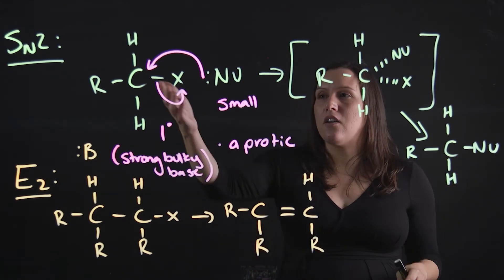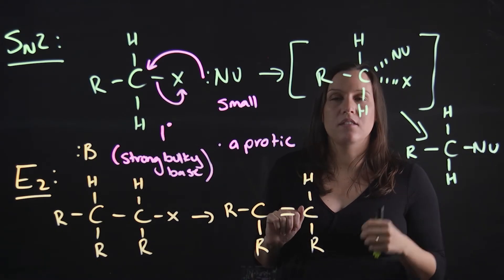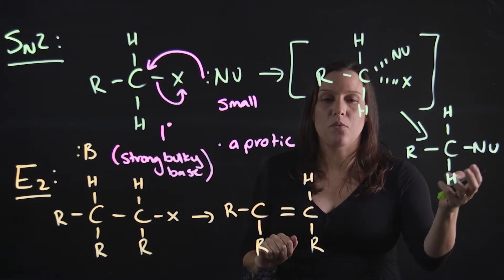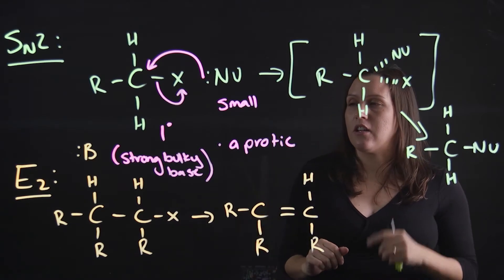This nucleophile will have an inversion of the stereochemistry, if that's a chiral carbon. So if we started off with R and we ended up with S, if we start off with S, we'd end up with R. So an inversion of that stereochemistry.